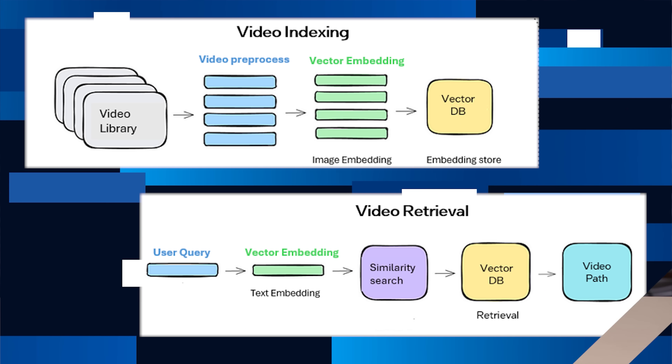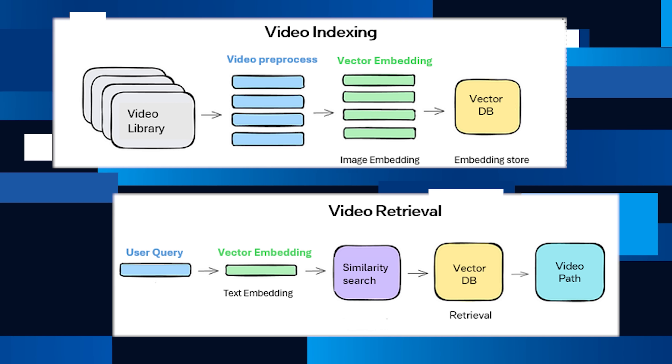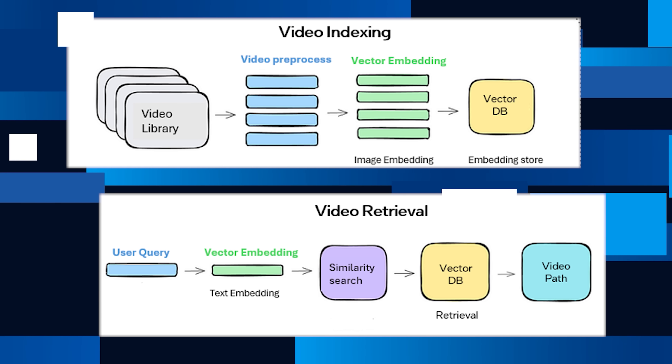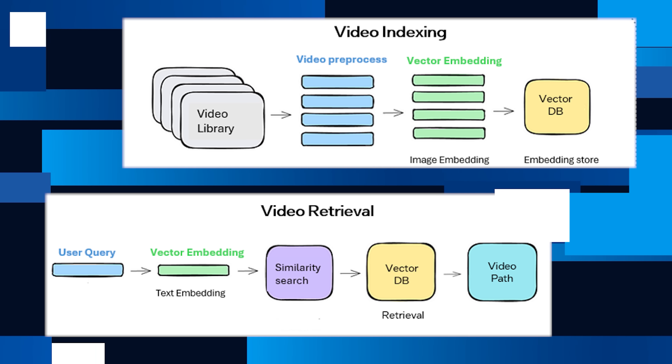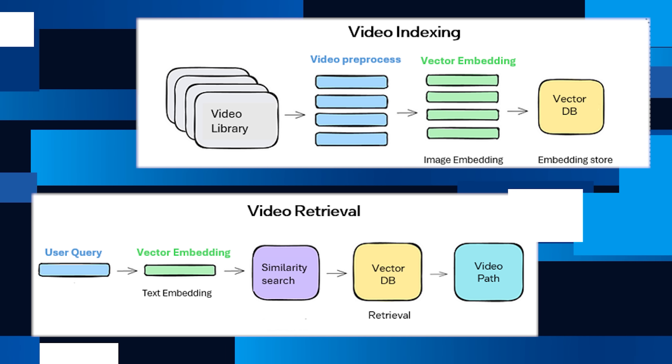With the new text-to-video search, you can use natural language to look for a video on your file system simply by describing the content of the video. This text-to-video search is powered by advanced AI techniques like visual embedding models and RAG, helping to map user queries to relevant video content by searching through an indexed vector database of video embeddings.